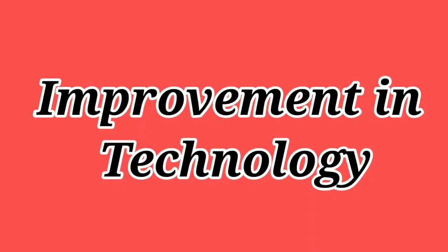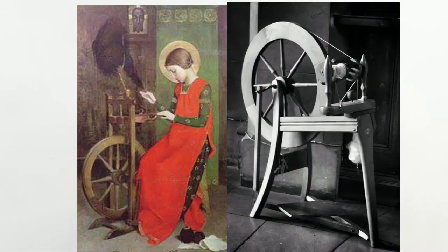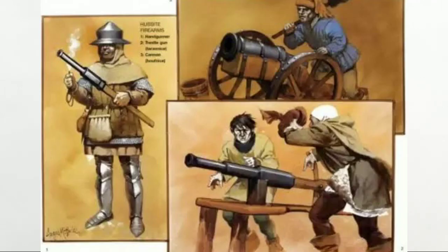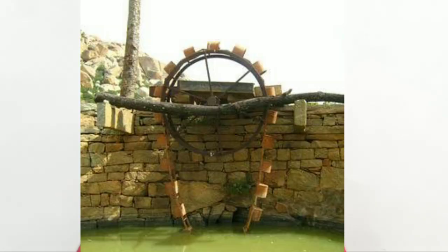The next factor is improvement in technology. During the medieval period, technology also improved. The spinning wheel was introduced, firearms were introduced, and the Persian wheel was used for irrigation. These are some of the technological changes which advanced the people.